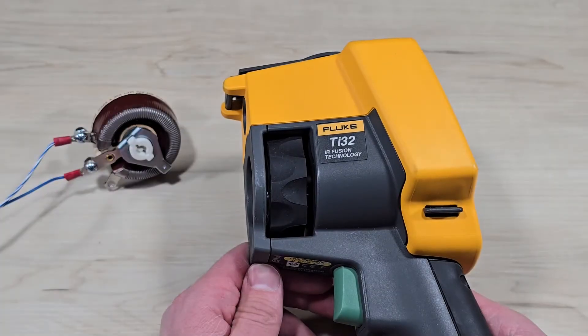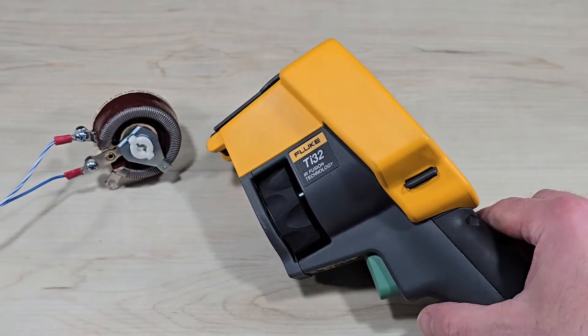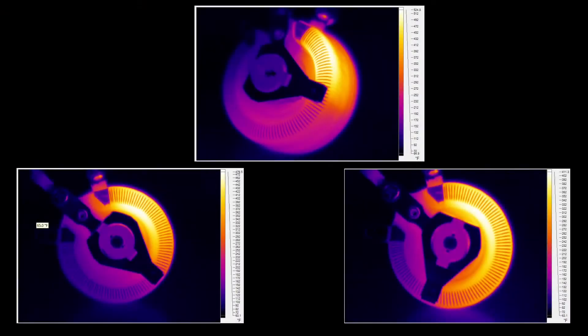This Fluke thermal imager will allow us to see what's going on in that resistor, and we'll do some circuit calculations to better understand the operation. 1.195 amps continuous. These images allow us to see what's really going on.